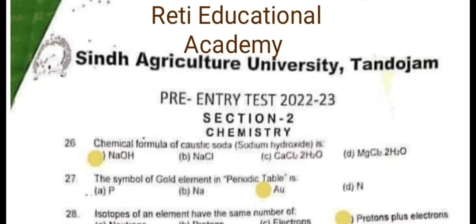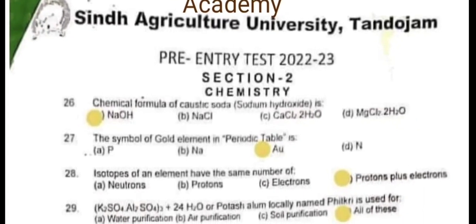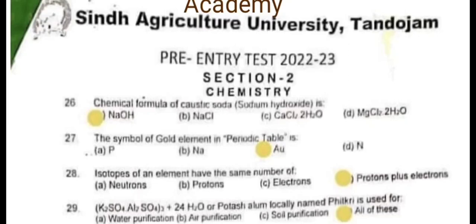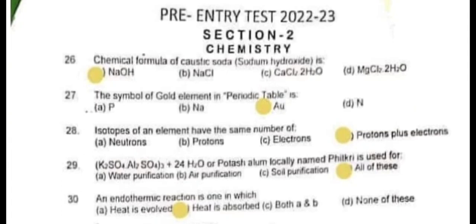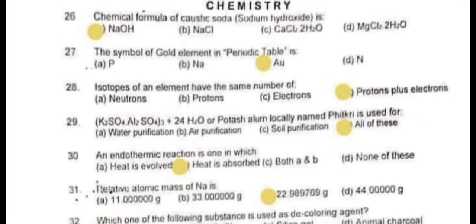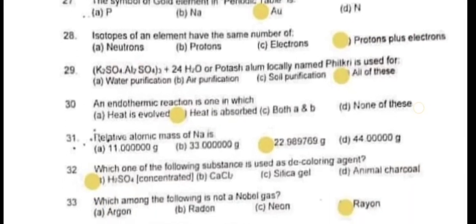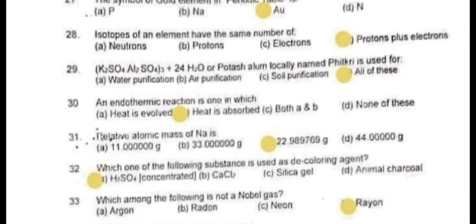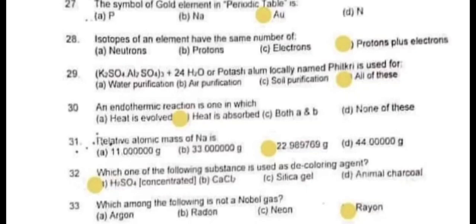This is the second part of Sindh Agricultural University Tandojam entry test paper 2022-23, Section 2 – Chemistry. In the previous video, I had already discussed the questions of the Biology section. Question 26: Chemical formula of caustic soda (sodium hydroxide) is NaOH. Question 27: The symbol of gold element in the periodic table is Au. Question 28: Isotopes of an element have the same number of protons and electrons. Question 29: K2SO4·Al2(SO4)3·24H2O (potassium alum) is used for water purification, air purification, and soil purification – the correct answer is all of these. Question 30: An endothermic reaction is one in which heat is absorbed.